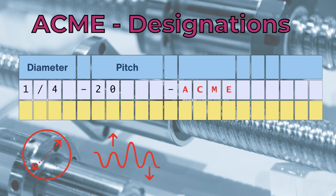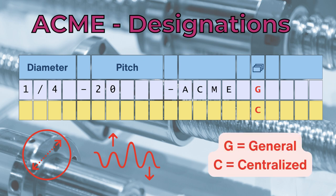Followed by another dash, we have the word ACME. After the word ACME, followed by a space, a single character indicates the series, which can be G for general, or C for centralized. We will talk more about the series later in this video.